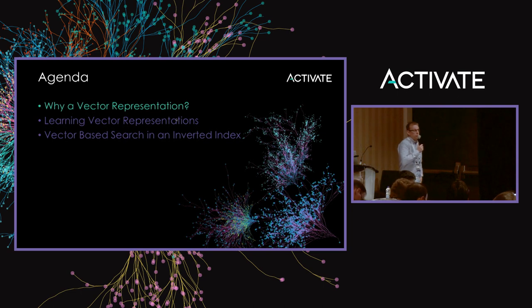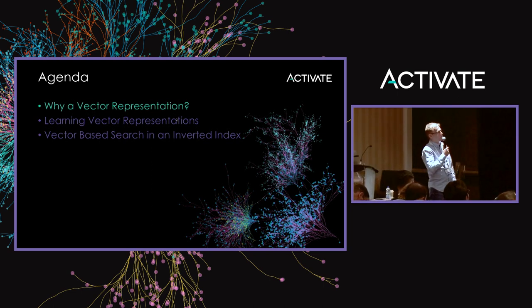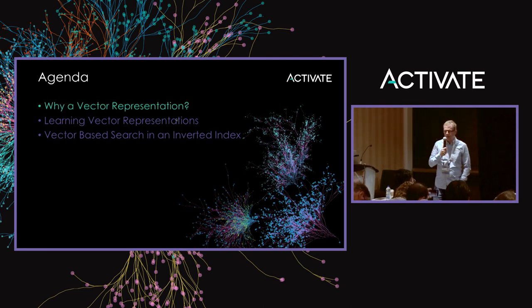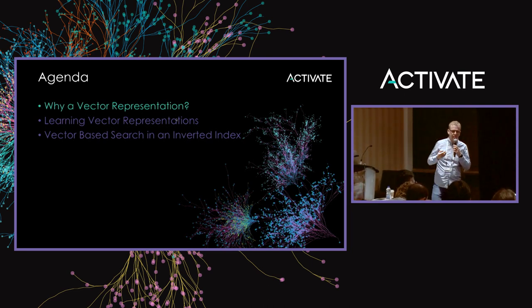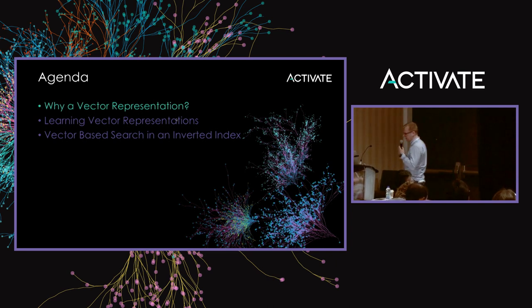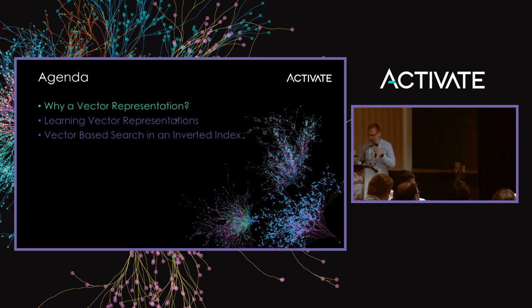I'm going to start by describing why we represent documents as vectors — or images, or whatever. Then I'll talk a bit about how you learn vector representations. After that, I'm going to focus on how to get vectors into an inverted index at scale, covering different approaches. It's far from a solved problem, but there are a lot of different ways to think about it, so I'm trying to cover a broad set of ideas.